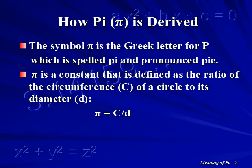Pi has a constant value and it is defined as the ratio of the circumference, C, of a circle to its diameter, D, so mathematically Pi is equal to C divided by D.